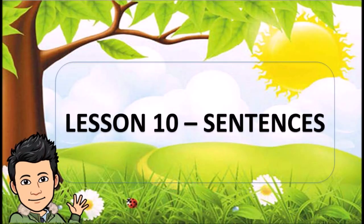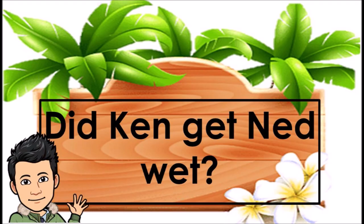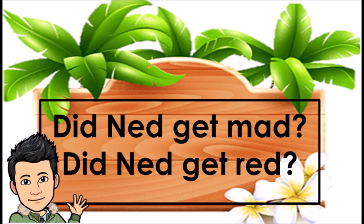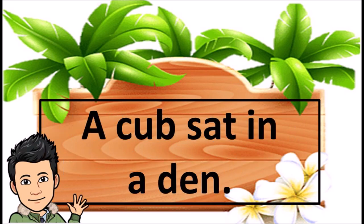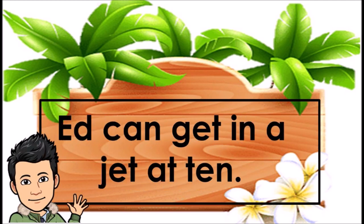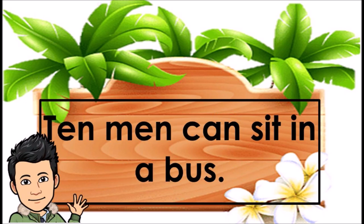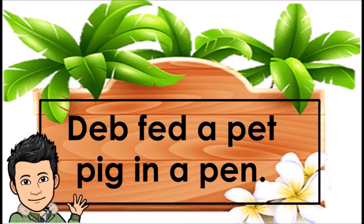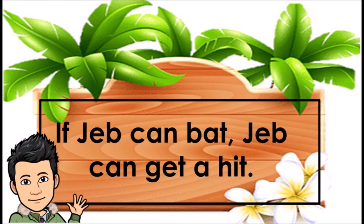Lesson 10. Sentences: Did Ken get Ned wet? Did Ned get mad? Did Ned get red? A cop sat in a den. Ted can get up at 10. Ed can get in a jet at 10. Ten men can sit in a bus. Deb fed a pet pig in a pen. If Jeb can bat, Jeb can get a hit.